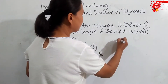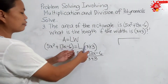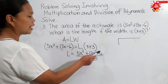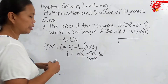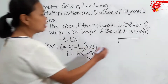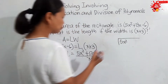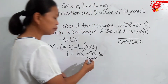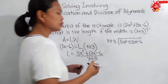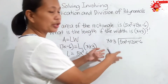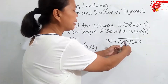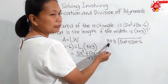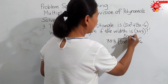Let us divide. For division, see to it that the dividend and the divisor are arranged in standard form. The highest degree is 2, then 1, then 0 for the dividend, and 1, 0 for the divisor. So we write: 5x squared plus 13x minus 6 divided by x plus 3. Division: first term of the dividend divided by the first term of the divisor — so 5x squared divided by x gives us 5x.